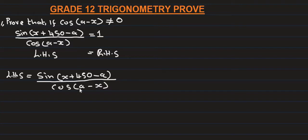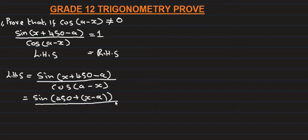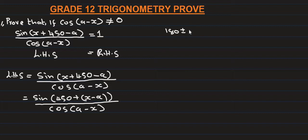So we rearrange this. It equals sign of 450 plus x minus a, all divided by cos(a - x). So we look at the quadrant. We use the rule: if 180 plus or minus theta, the sign of the function equals the sign of theta — whether it is cos or sin, the same as the function of theta.